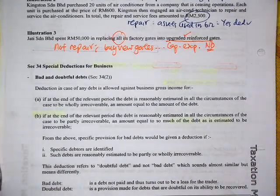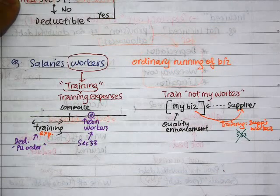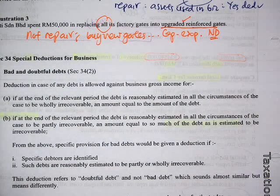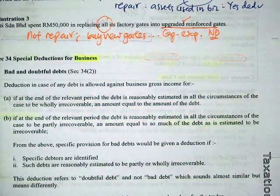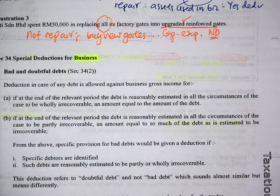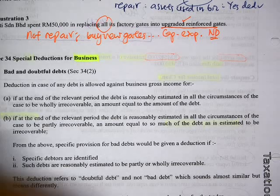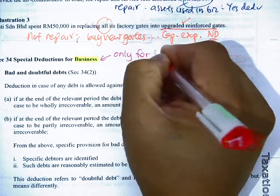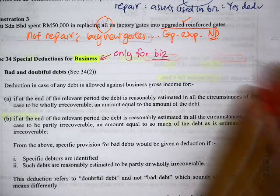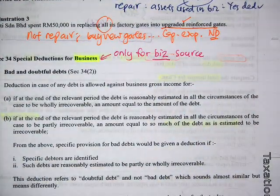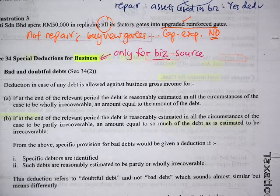Now we move on to look at Section 34. Further to what we discussed, we have Section 34 because it gives you a backup for expenses that Section 33 does not cover. You must recall the example about why, when you train other people's workers, you need Section 34. The list of expenses under Section 34 falls under the heading 'deduction for business.'